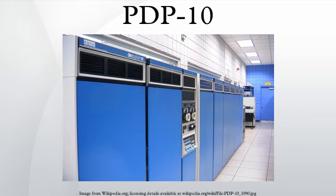The original PDP-10 processor is the KA-10, introduced in 1968. It uses discrete transistors packaged in DEC's flip-chip technology, with backplanes wire-wrapped via a semi-automated manufacturing process. Its cycle time is 1.1 microseconds and its add time 2.1 microseconds. In 1973, the KA-10 was replaced by the KI-10, which uses TTL-SSI. This was joined in 1975 by the higher-performance KL-10, which is built from ECL, microprogrammed, and has cache memory.